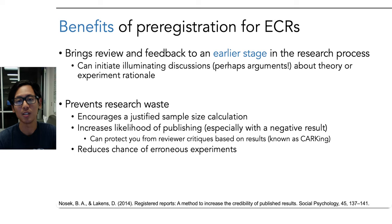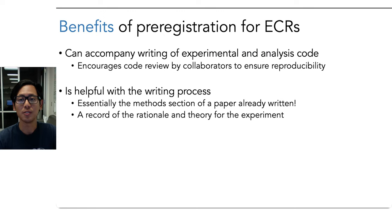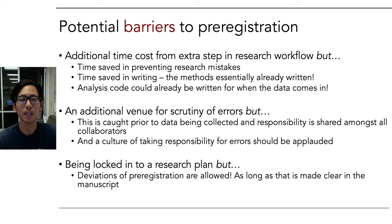Pre-registration also helps prevent research waste by encouraging a justified sample size calculation — a good target for early career researchers. It increases the likelihood of publishing, especially with a negative result, and can protect you from reviewer critiques based on results, known as HARKing. It reduces the chances of mistakes and erroneous experiments, which could waste precious time. It can accompany writing of the experimental analysis code, sharing responsibility for making it readable and reproducible. And it's helpful for the eventual writing process — the pre-registration is essentially the methods section already written, and a record of the rationale you can revisit when writing your introduction.